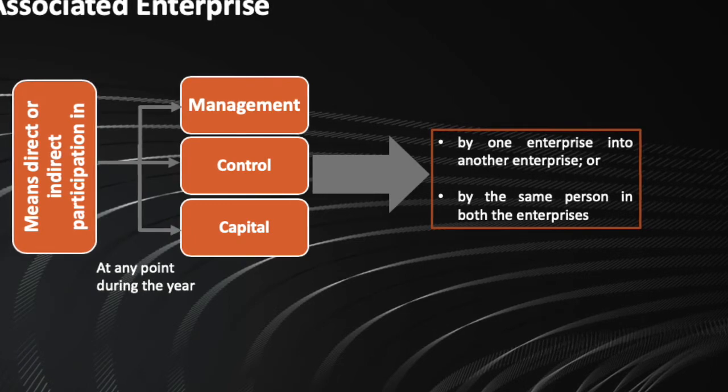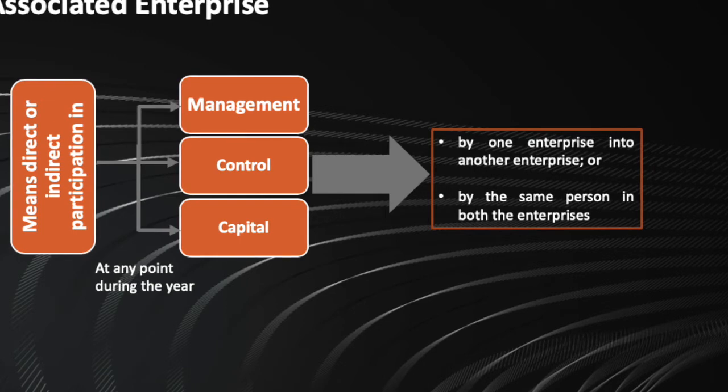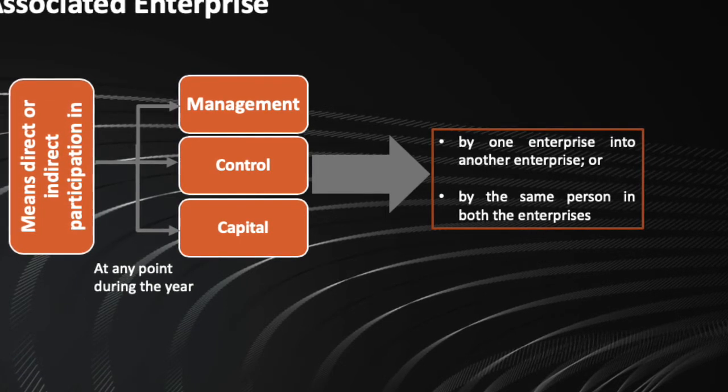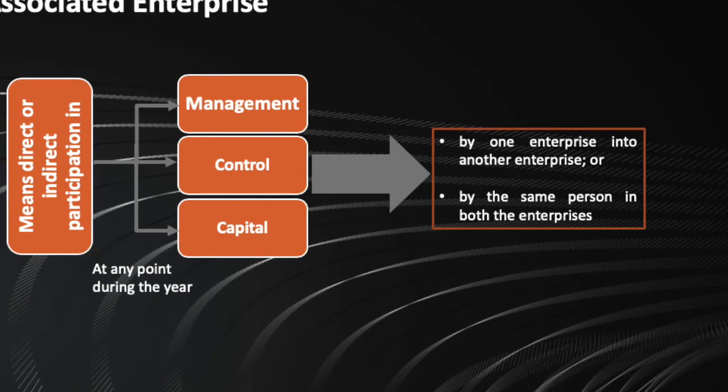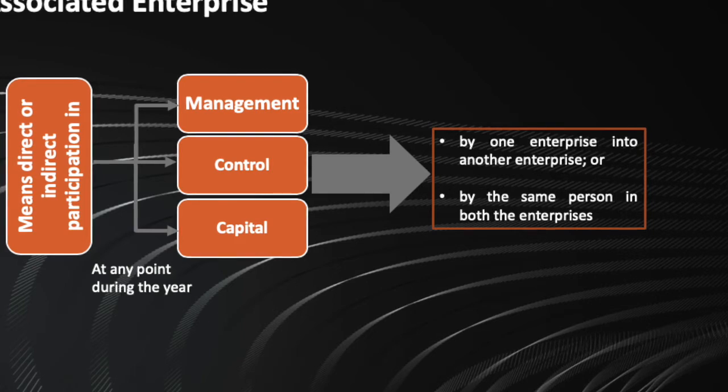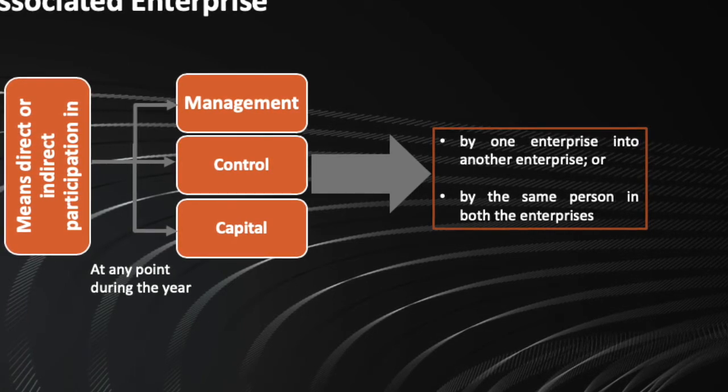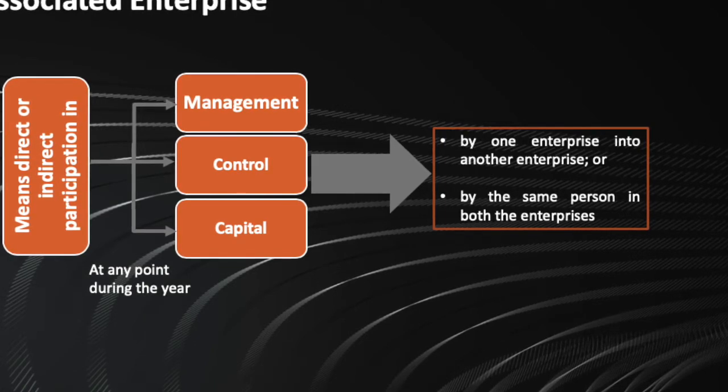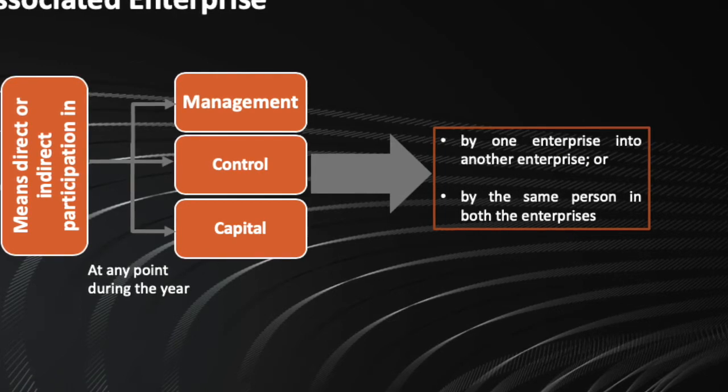Now to avoid any confusion, the associated enterprise is defined to include 13 specific conditions. Now if one enterprise in relation to another enterprise falls in any of these 13 strict definitions, only then both of these enterprises would be considered as associated enterprises. Otherwise, they would not be considered as associated enterprises.